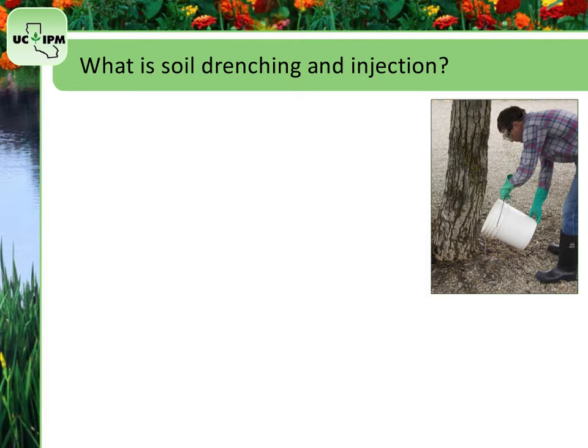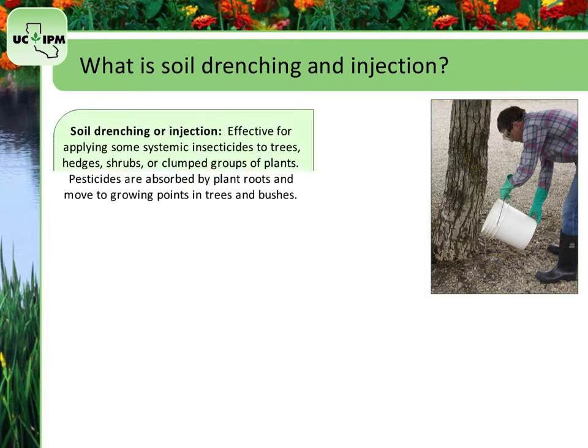Soil drenching or injection beneath infested plants is an effective method to use when applying some systemic insecticides to trees, hedges, shrubs, or clumped groups of plants. Pesticides are absorbed by plant roots and moved to growing points in trees and bushes.